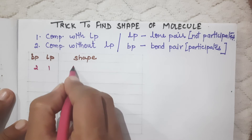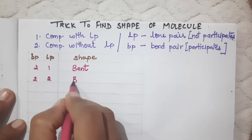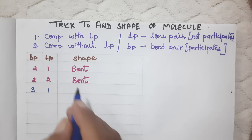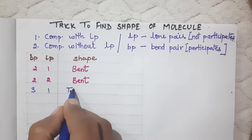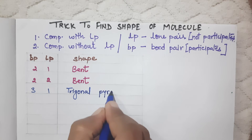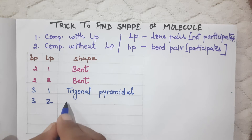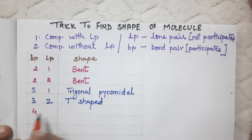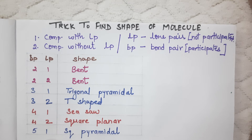If we have two bond pairs and one lone pair, the shape will be bent. If we have two bond pairs and two lone pairs, the shape will also be bent. If we have three bond pairs and one lone pair, the shape will be trigonal pyramidal. If we have three bond pairs and two lone pairs, the shape will be T-shaped. If we have four bond pairs and two lone pairs, the shape will be square planar.